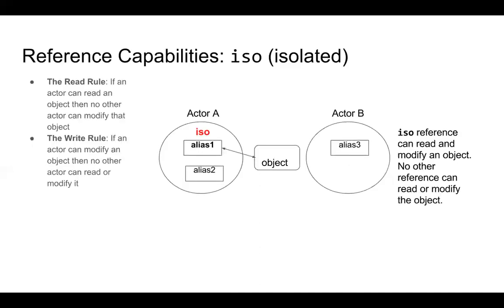Let's walk through reference capabilities more closely. ISO means the reference can read and modify an object — no other reference can read or modify that object. In our diagram, actor A has alias one pointing to an object, and there can't be any other aliases that can read or modify it. That's because of the read rule and write rule: if the actor can read an object, no other actor can modify it. ISO is very restrictive.